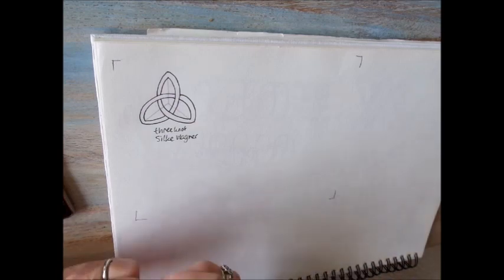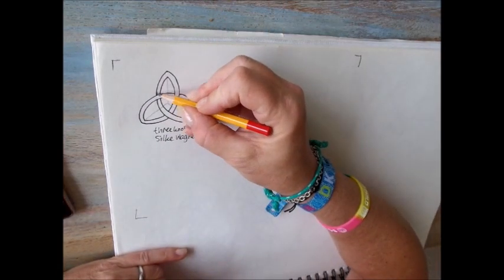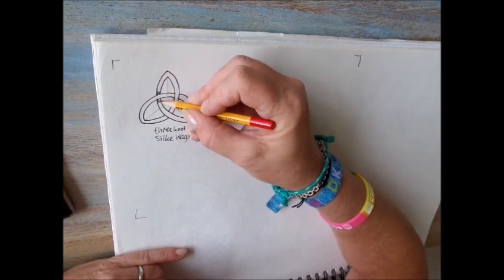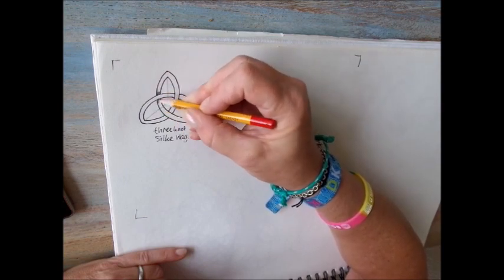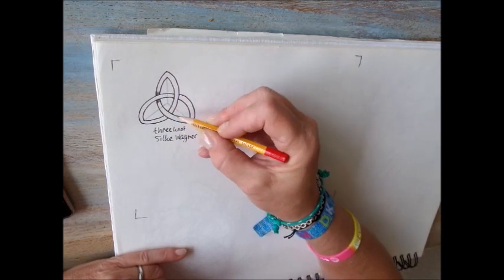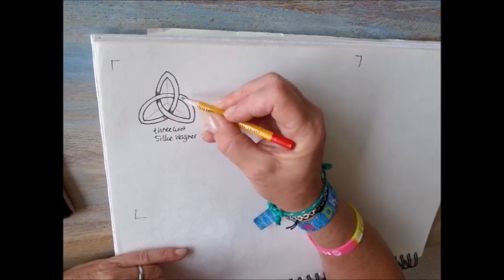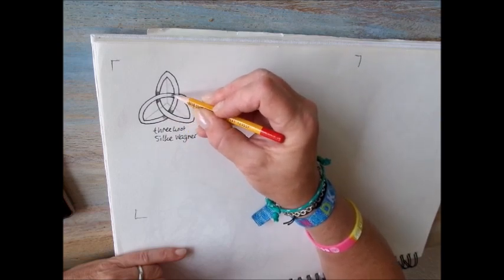The shading, which gives the pattern some depth. This one goes over. The shading will be here. Here it goes over. The shading will be here. This one goes over and the shading will be here.